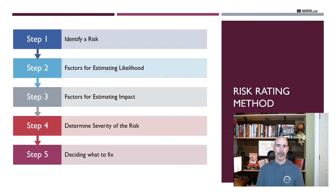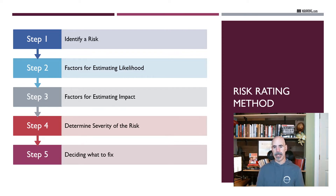The first thing we need to do is identify the risk we're trying to rate — this could be something like the circumvention of authentication, or a system with internet access containing sensitive data. Then we look at the factors for estimating the likelihood of that vulnerability being leveraged, and the factors for estimating the impact. That comes out to understanding the severity of the risk, and then you decide what to fix based on the organization's risk tolerance.